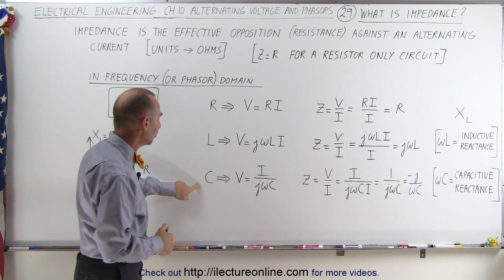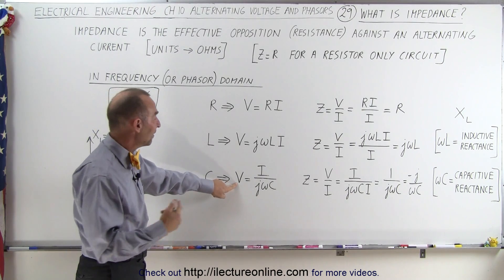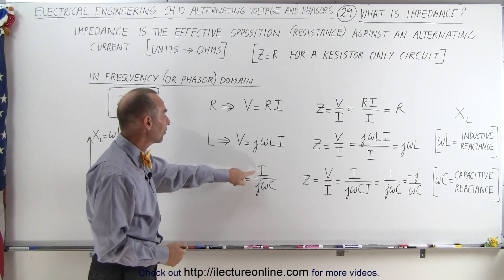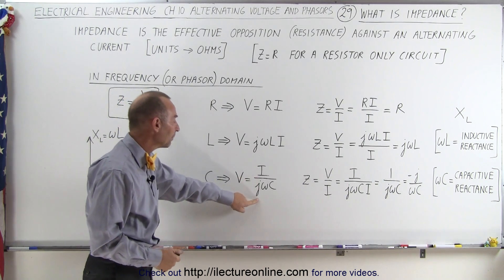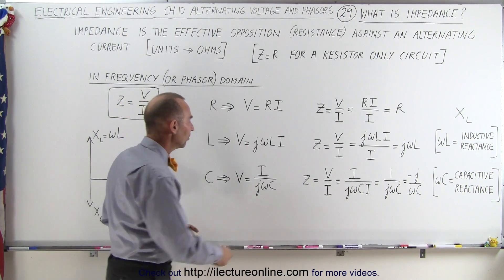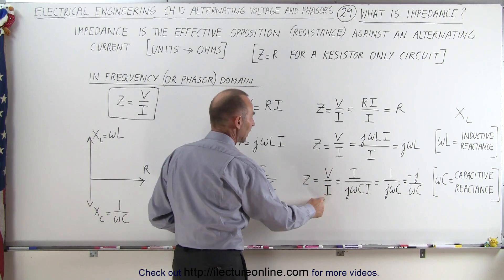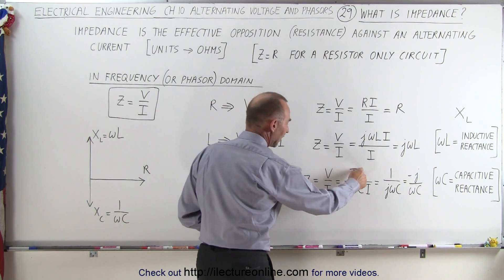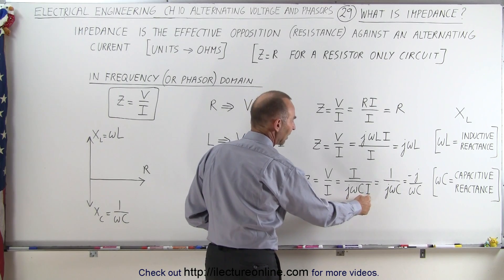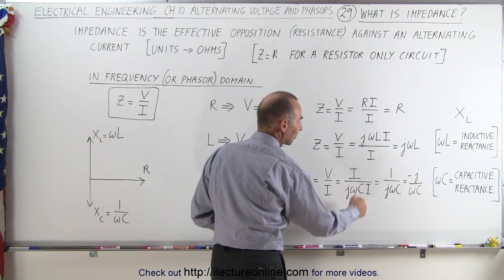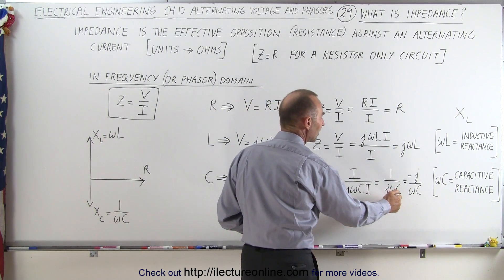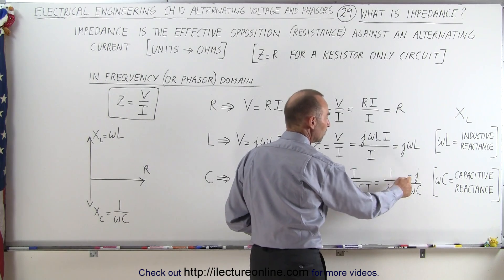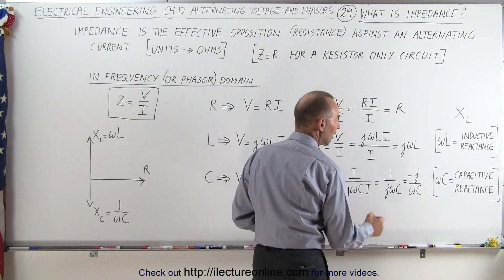Looking at capacitors, the voltage in the phasor domain — or frequency domain — is defined as the current divided by j omega C. Since impedance is the voltage divided by the current, we replace the voltage and cancel out the currents to get 1 over j omega C. Bringing j to the numerator, this becomes minus j over omega C.